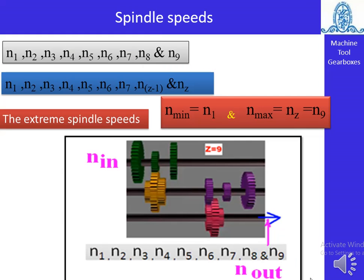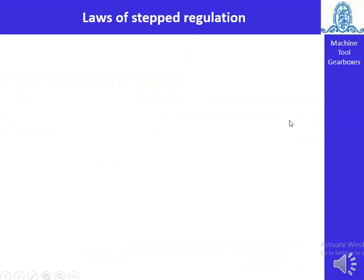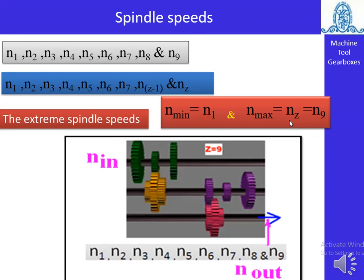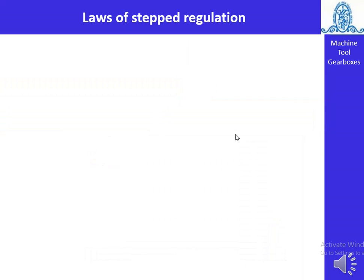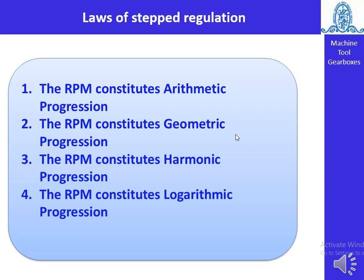The spindle speeds range from N1 to Nz, which we can also call N_minimum to N_maximum. N_minimum is N1 and N_maximum is the last step Nz. The extreme spindle speeds are N_minimum and N_maximum, corresponding to the minimum and maximum output speeds from the spindle shaft. The law of step regulation will be discussed in the next lecture. Thank you very much for watching.